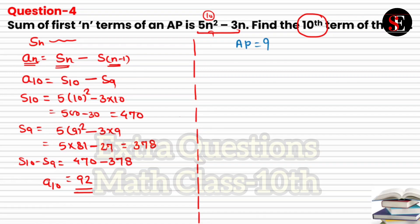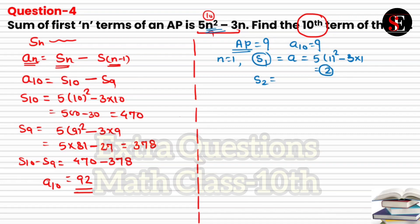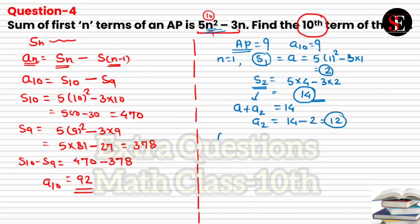In the second method, we first find the first term a and common difference d. When n = 1, S₁ = a = 5×1² − 3×1 = 5 − 3 = 2. For n = 2, S₂ = 5×4 − 3×2 = 20 − 6 = 14. Remember, S₂ is the sum of the first two terms, i.e., a₁ + a₂ = 14. So a₂ = 14 − a₁ = 14 − 2 = 12.